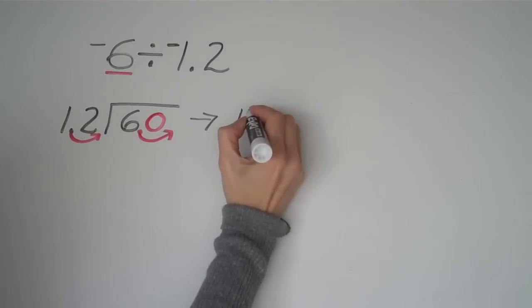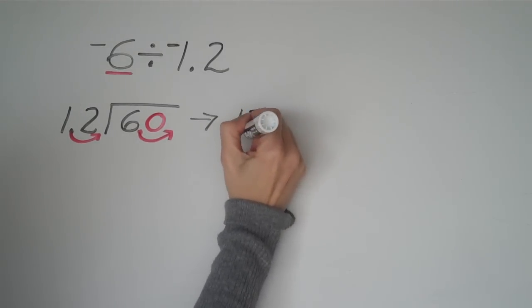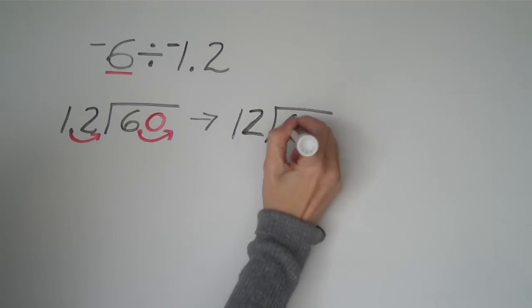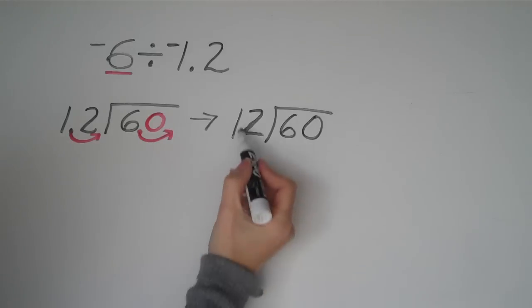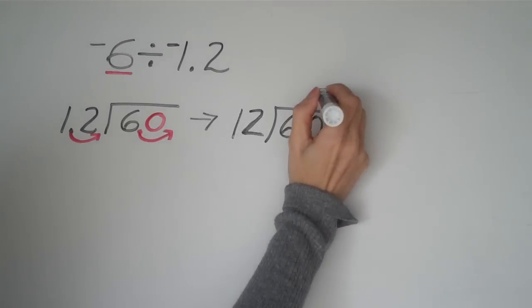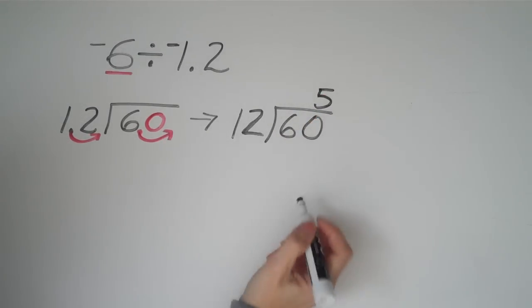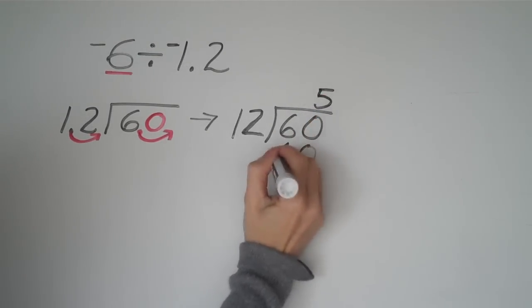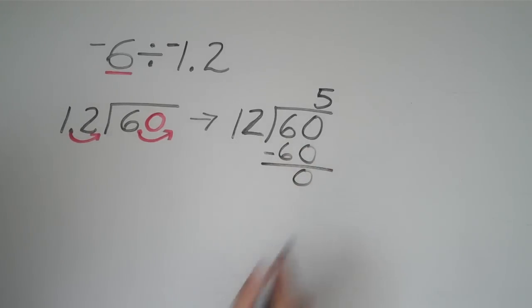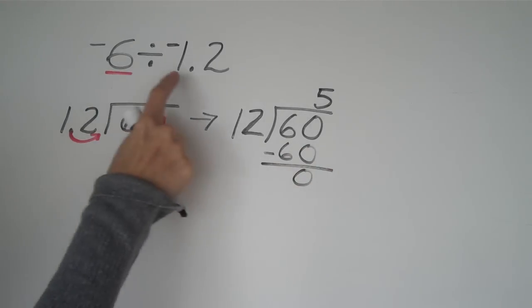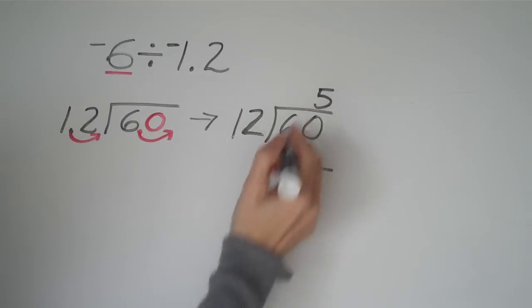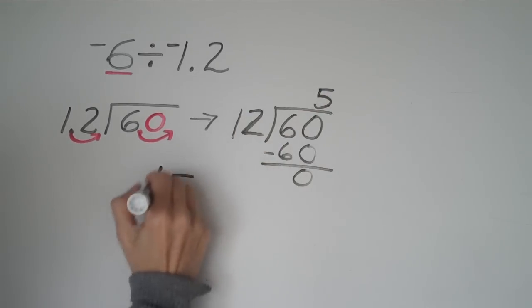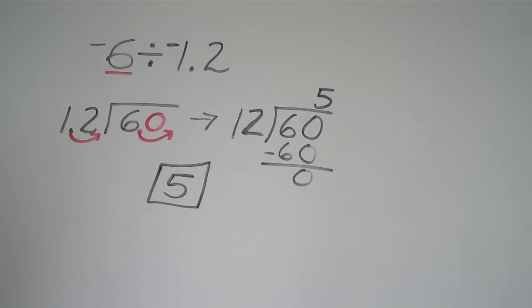Let's just rewrite this. Twelve is going to get divided into now 60. And you get a zero. And again, we have a negative divided by a negative. So we will get a positive five as our answer. So that was a pretty easy one.